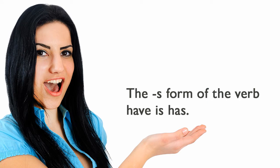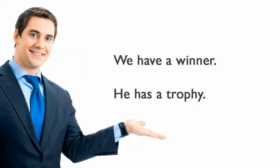The verb 'have': The S form of the verb 'have' is 'has'. For example: We have a winner. He has a trophy.